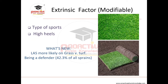Extrinsic factors include the type of playing surface. According to the literature, lateral ankle sprain occurrence depends on the type of sport — contact sports carry higher risk. Lateral ankle sprain is more likely on grass than on turf, and approximately 42% of ankle sprains are associated with turf-type surfaces.